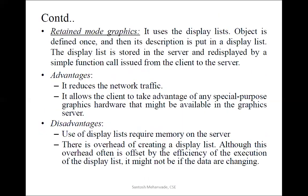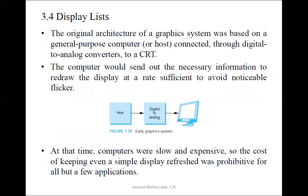First, let us see this display list. The original architecture of a graphic system was based on a general purpose computer, or host machine, that is connected through digital-to-analog converters to a CRT. In the typical Von Neumann architecture, that is our normal computer system, when talking in terms of graphics, we call it a graphic system based on the normal computer.